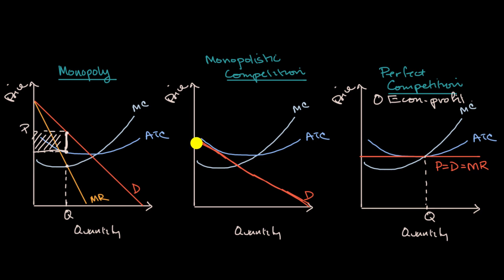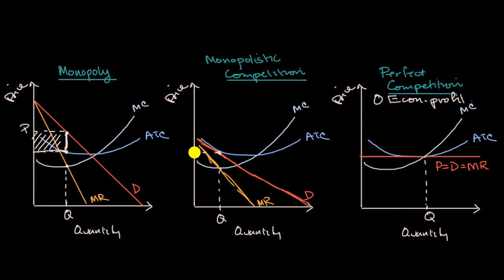Your marginal revenue curve would look something like this — it would have twice the slope down. Notice what has now happened: it is now rational for you to produce at a quantity where the price you are getting equals your average total cost. So as more and more people entered because you were getting economic profit, the demand curve has shifted to the left, and now there is zero economic profit in the long run.